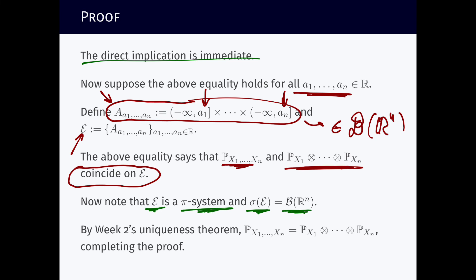Well, we are in a finite measure space, so we don't need the assumption of this increasing sequence of whatever that was required in the theorem of uniqueness that we saw at the beginning of week two.